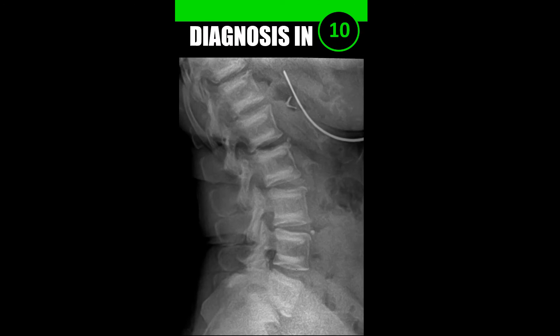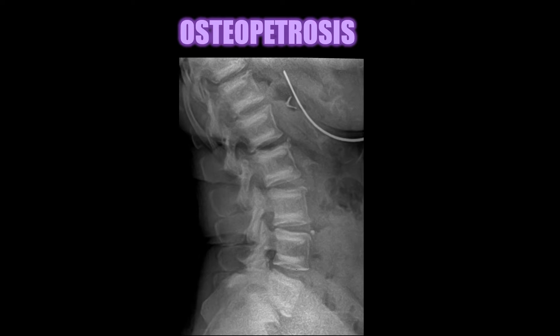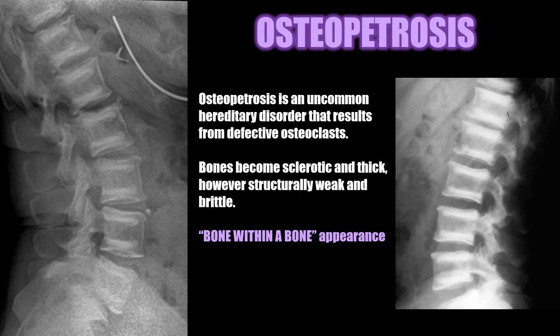Case number three: this is a classic example of the bone within a bone appearance seen with osteopetrosis. Osteopetrosis is an uncommon hereditary disorder that results from defective osteoclasts. Bones can become sclerotic and thick, however they're structurally weak and brittle, and radiographically they present with this bone within a bone appearance.